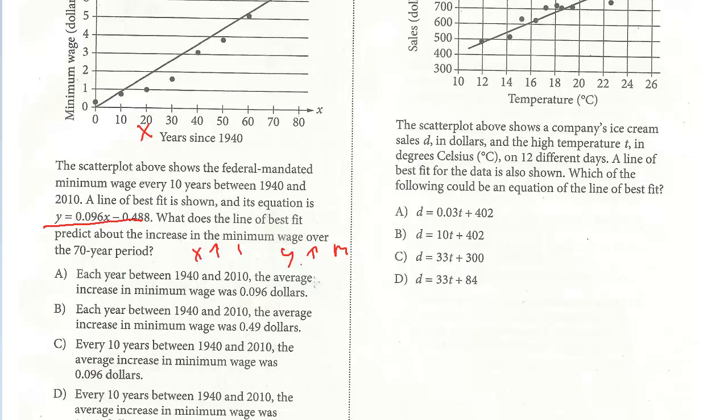Every year, so when the x increases by 1, we know that the average increase is 0.096, which is the slope. This has to be right. So this is not a hard question for 29. We've seen this before. Just remember, if the x goes up by 1, the y would increase by the slope.